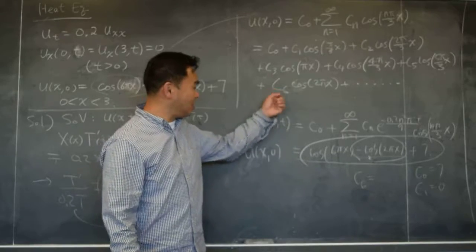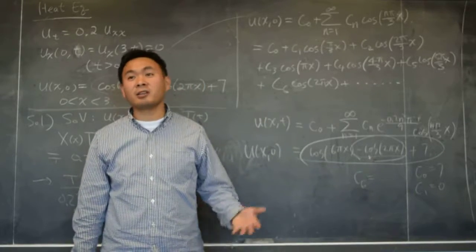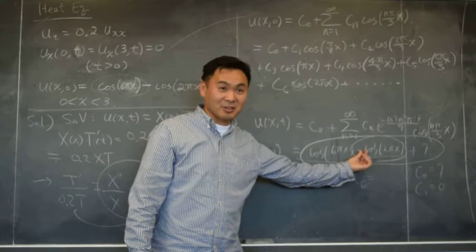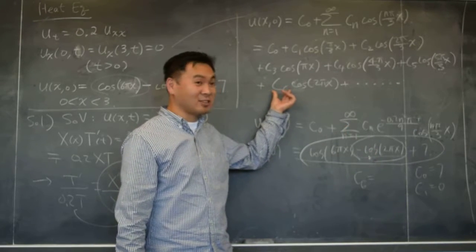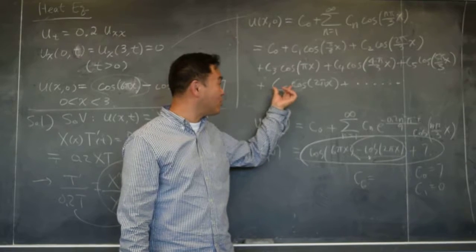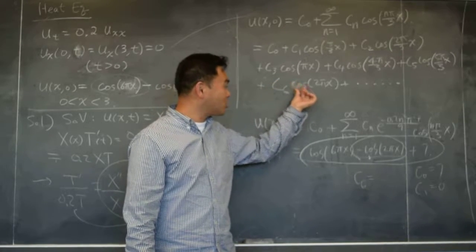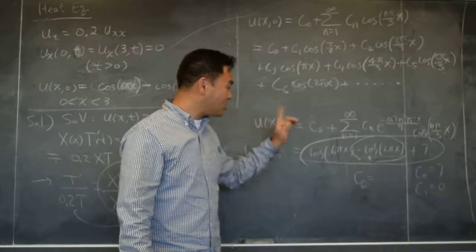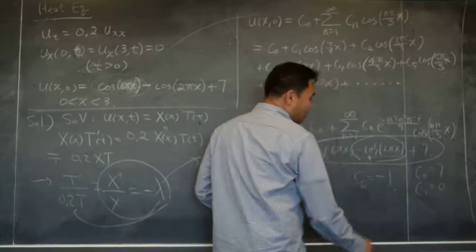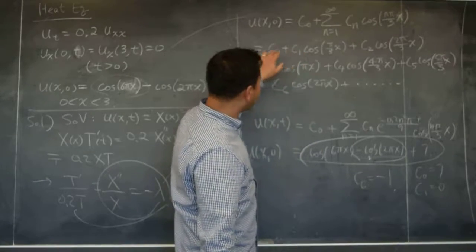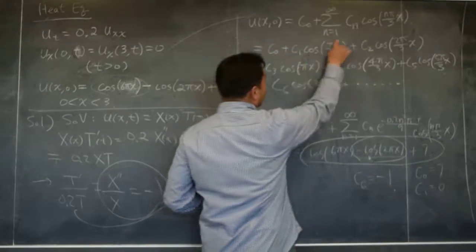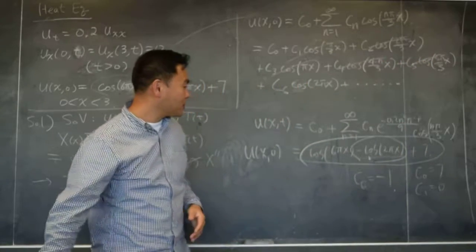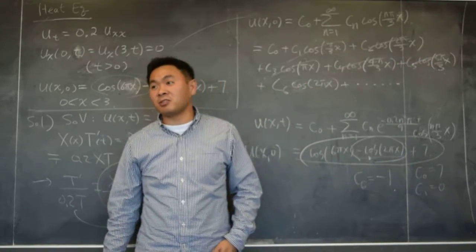So C_6 should be what? Negative 1. Now you see it, right? It's obvious. Negative 1 cosine(2πx). C_6 should be negative 1. If this is negative 1, then you get negative 1 cosine(2πx), so they agree. So C_6 should be negative 1. Everything beforehand except C_0, these should all be 0 for it to match with this one.